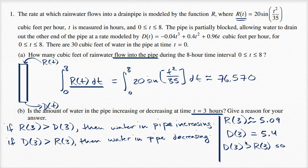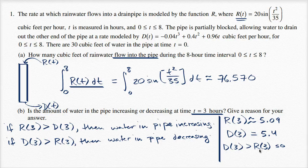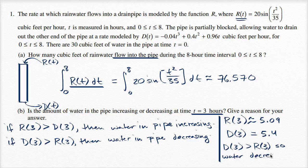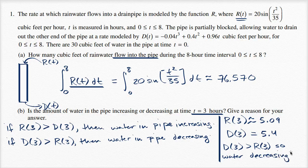So D(3) is greater than R(3). So water decreasing. We're draining faster than we're getting water into it. So water is decreasing.